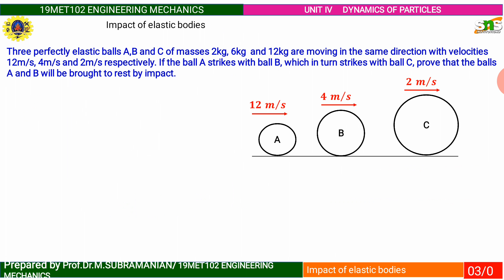Another example problem. Three perfectly elastic balls A, B and C of masses 2 kg, 6 kg and 12 kg are moving in the same direction with velocities 12 meters per second, 4 meters per second and 2 meters per second respectively. If ball A strikes ball B which in turn strikes ball C, prove that balls A and B will be brought to rest by the impact.